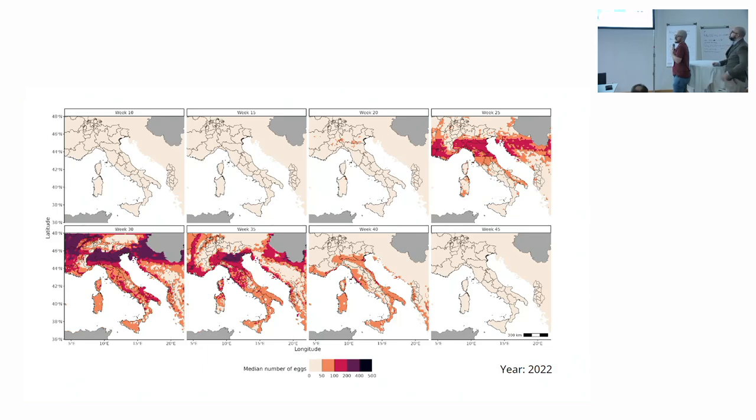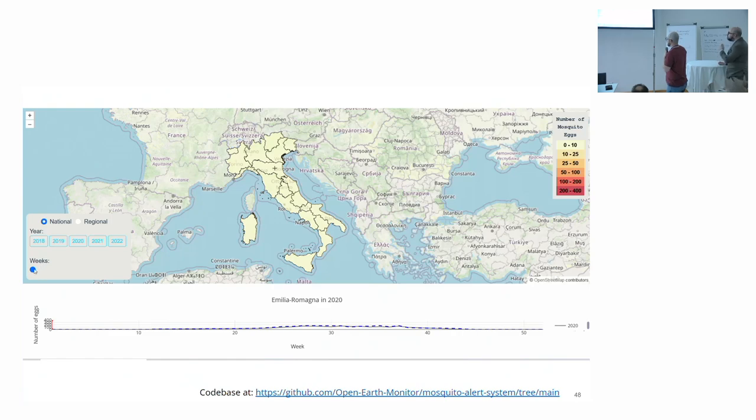So we decided to predict, to get maps, because we love maps, and voila. We got spatial-temporal dynamics of the oviposition activity of the tiger mosquito for the year 2022.